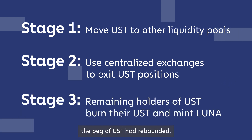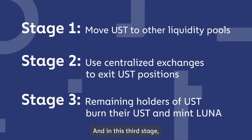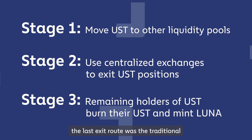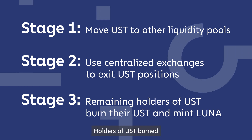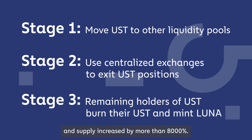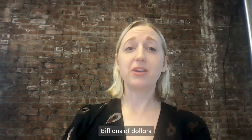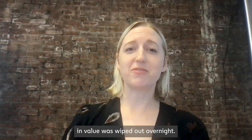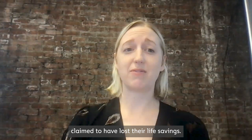On the evening of May 11th, the peg of UST had rebounded, but the negative sentiment was too much to overcome. In this third stage, the last exit route was the traditional burn and mint mechanism. Holders of UST burned their UST and minted LUNA, causing LUNA's price to plummet and supply increased by more than 8,000%. Billions of dollars in value was wiped out overnight. People claimed to have lost their life savings.